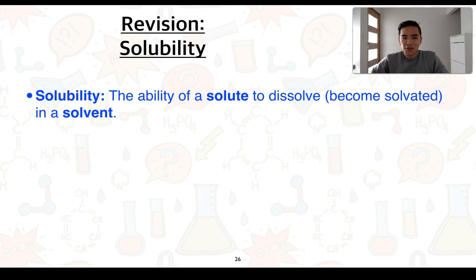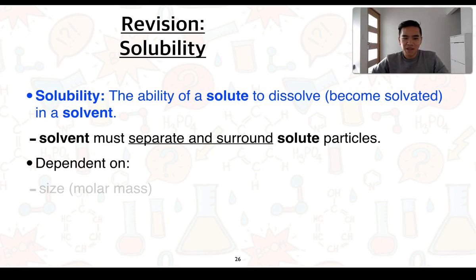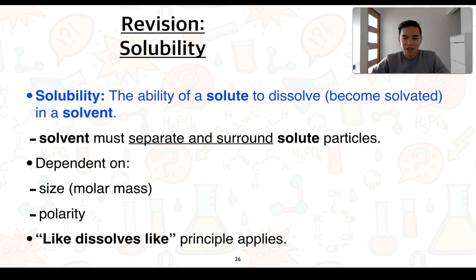For our next physical property, we're going to consider solubility. As a bit of revision, solubility refers to the ability of a solute to dissolve — or become solvated — in a solvent. The solvent must be able to separate and surround the solute particles. This is dependent on size, which links into molar mass, and also on polarity. We can employ the principle known as like-dissolves-like to understand whether a solvent will dissolve a particular solute, but keep in mind this doesn't explain why — for that, we have to look at the types and strengths of intermolecular forces.